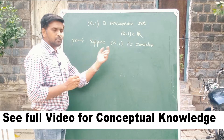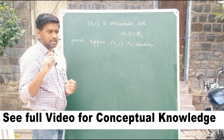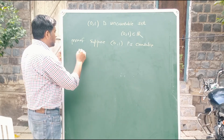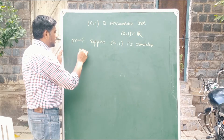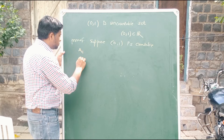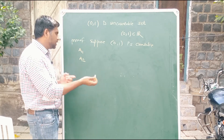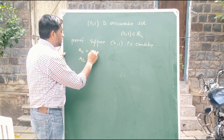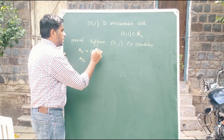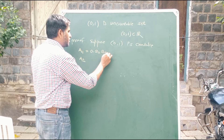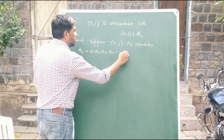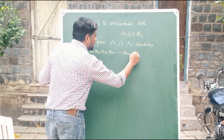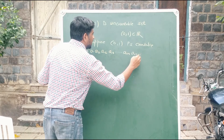Every element of the open interval (0,1) is of the form 0.something. For labeling, we use notation: suppose we label the elements a₁, a₂, and so on. Then a₁ = 0.a₁₁ a₁₂ a₁₃ ... a₁ₙ a₁ₙ₊₁ and so on, where each aᵢⱼ represents an individual digit.